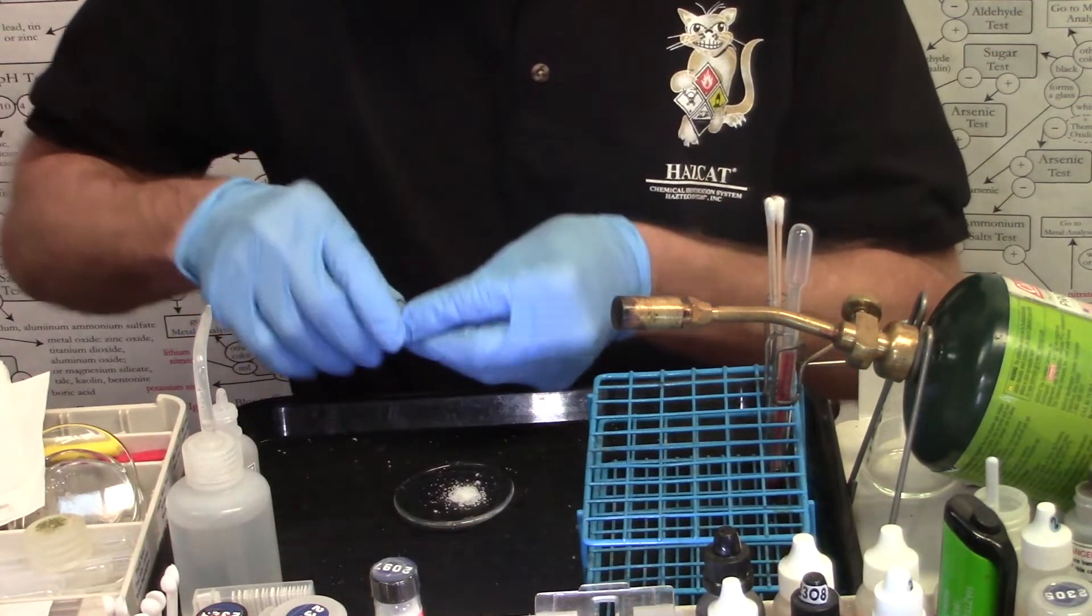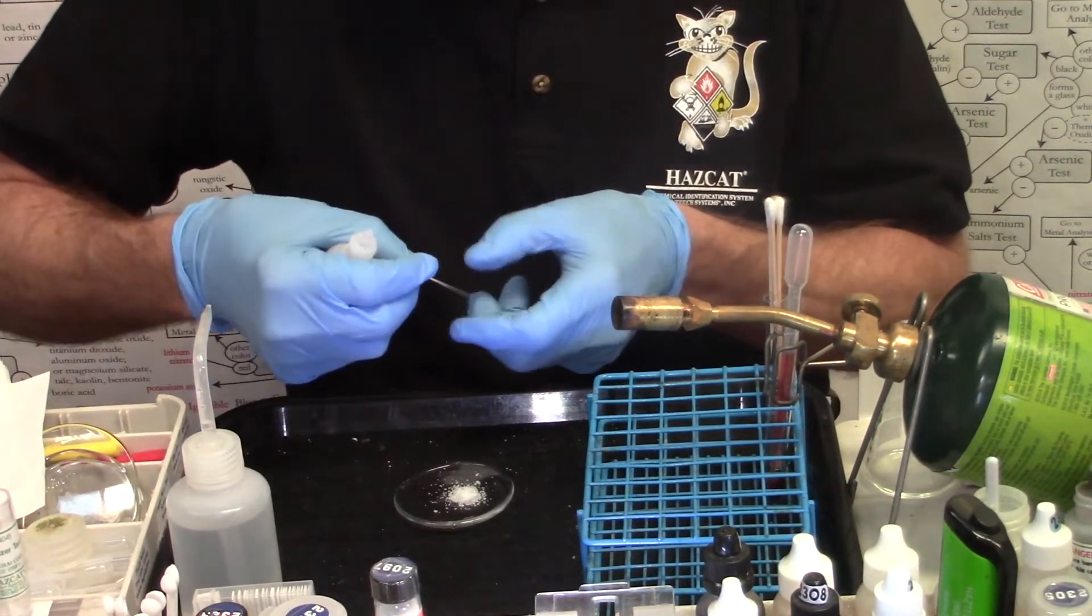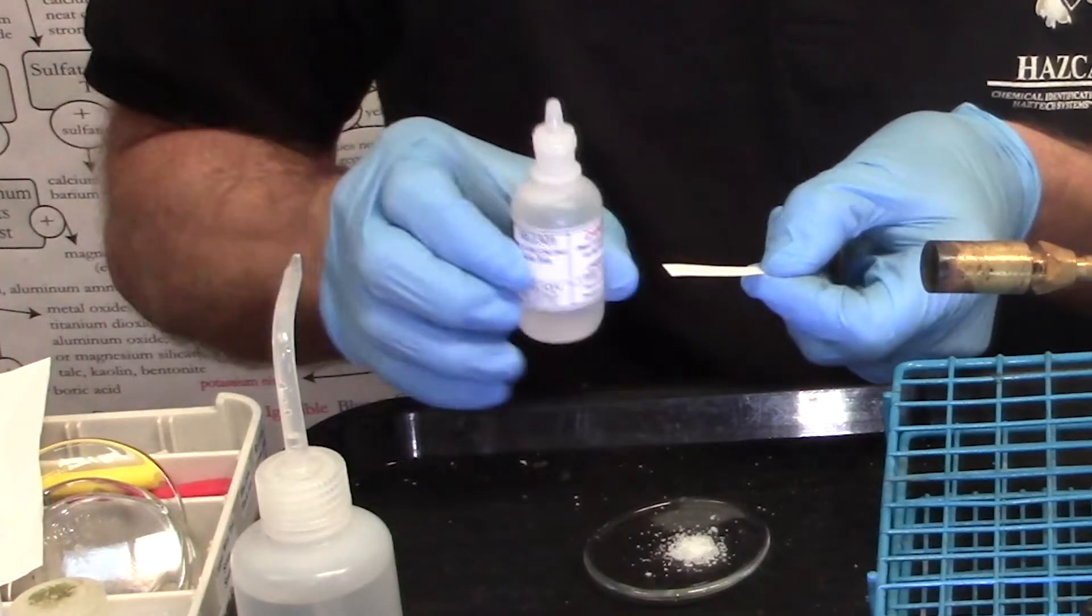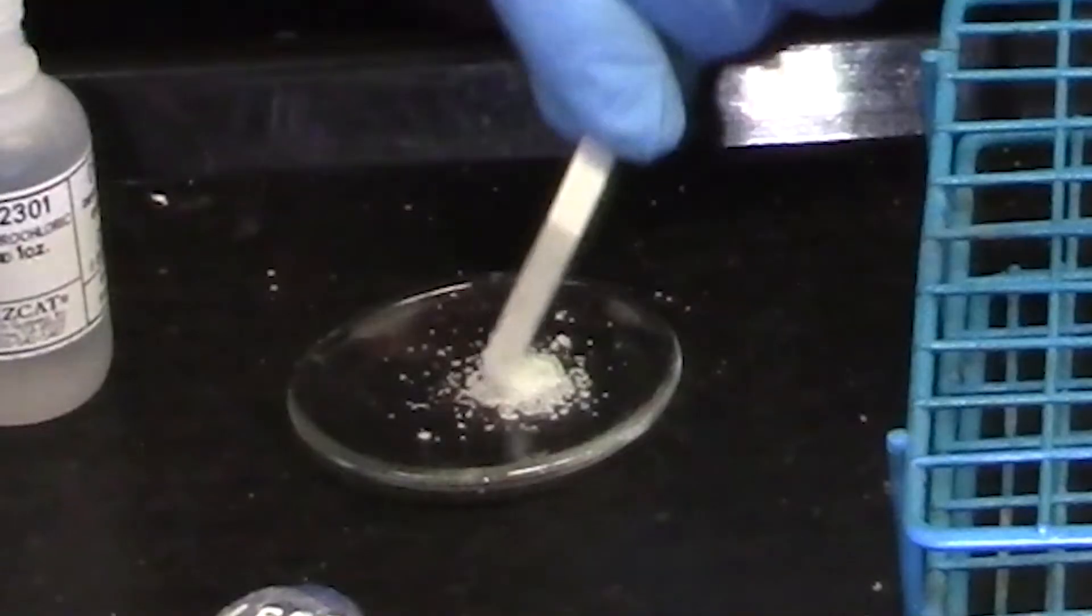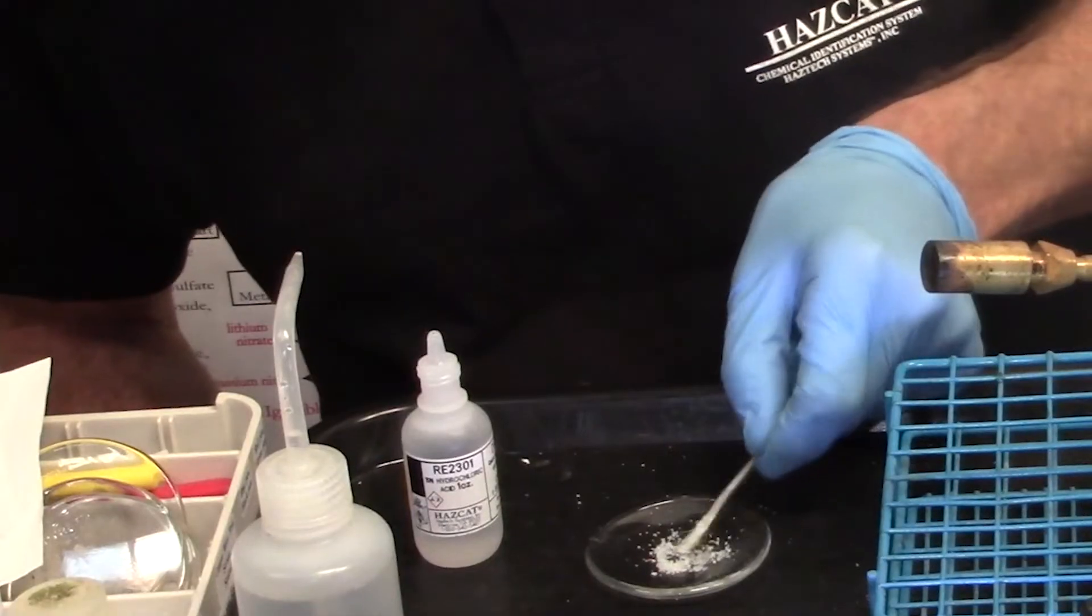Take my strip of oxidizer test paper. Wet it with two drops of RE2301. One, two. And then one one thousand, two one thousand, three one thousand. Lift, look.